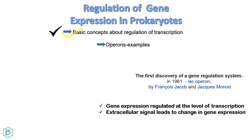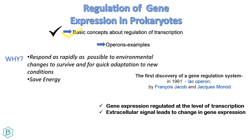Gene expression is regulated at the level of transcription, and extracellular signals lead to changes in gene expression. Why is this necessary? Prokaryotes must respond as rapidly as possible to environmental changes to survive, for quick adaptation to new conditions in their growing medium, and also to save energy.